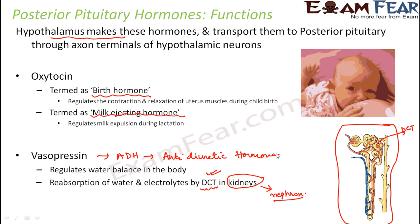It is called anti-diuretic because 'anti' means against, and it limits the formation of urine. It does this by absorbing more and more water from the urine, so not allowing a lot of urine to be formed. This is actually beneficial for the body as it reabsorbs more water. So oxytocin and vasopressin are the two posterior pituitary hormones.